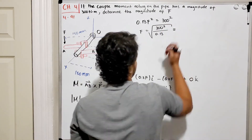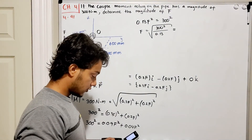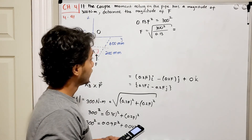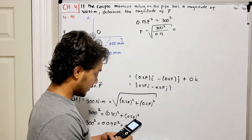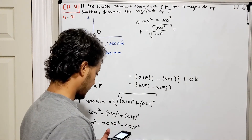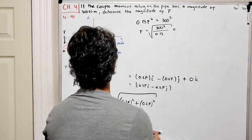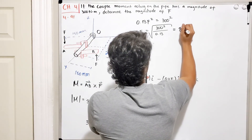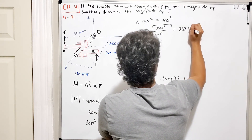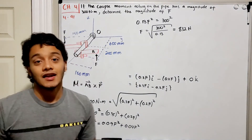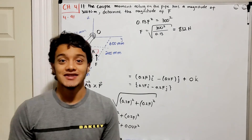Using the calculator, I compute the square root of (300² divided by 0.13), and this gives me 832 newtons. So F is equal to 832 newtons.